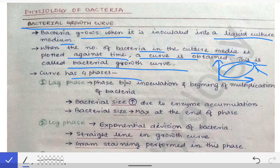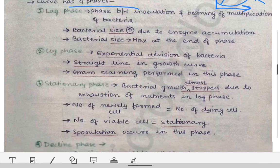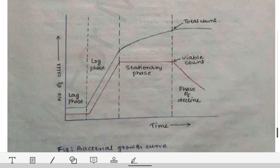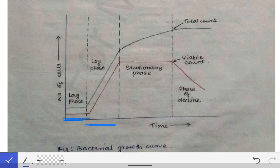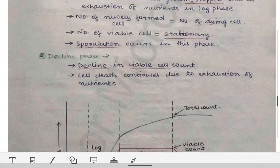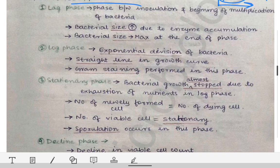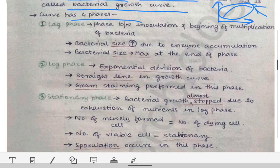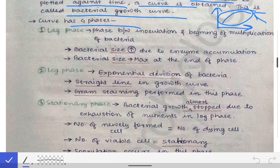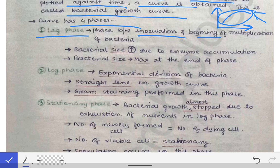This curve has four phases. The four phases are: lag phase, log phase, stationary phase, and decline phase. On the graph, we can see each phase sequentially — lag phase, then log phase, then stationary phase, and finally decline phase. We will read each phase one by one, covering the events important from an exam and MCQ point of view.